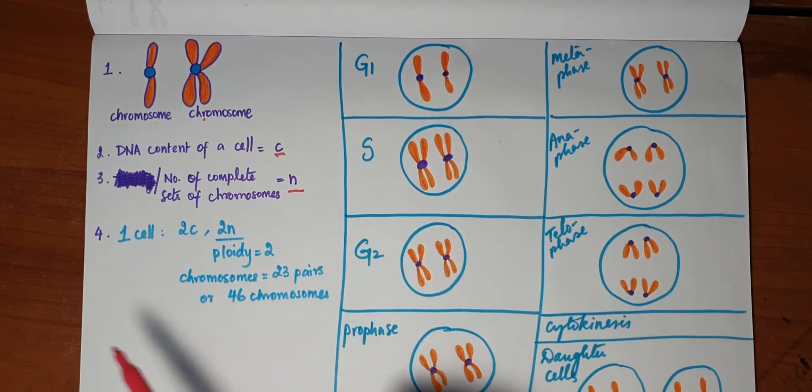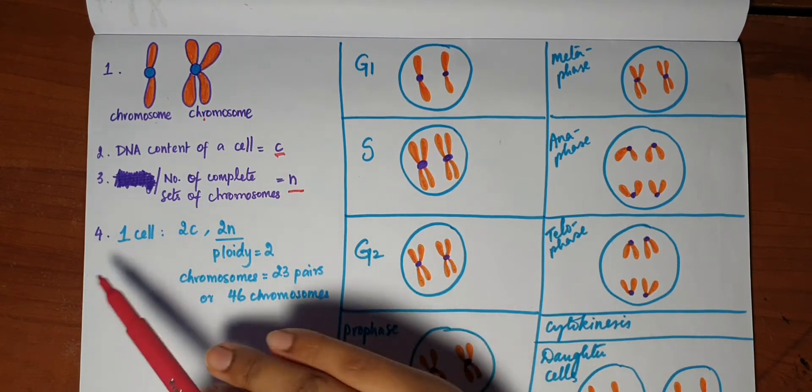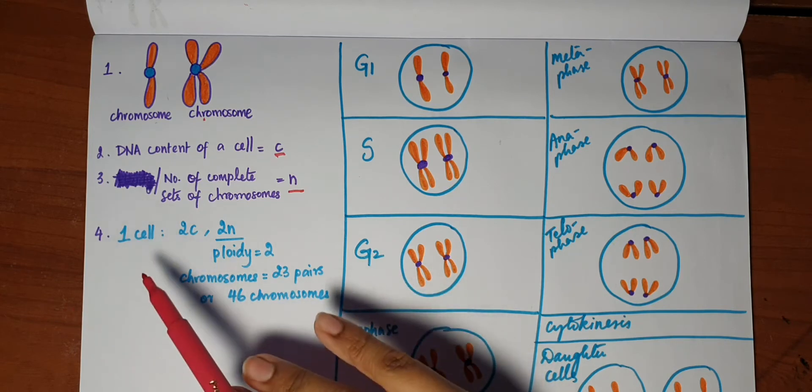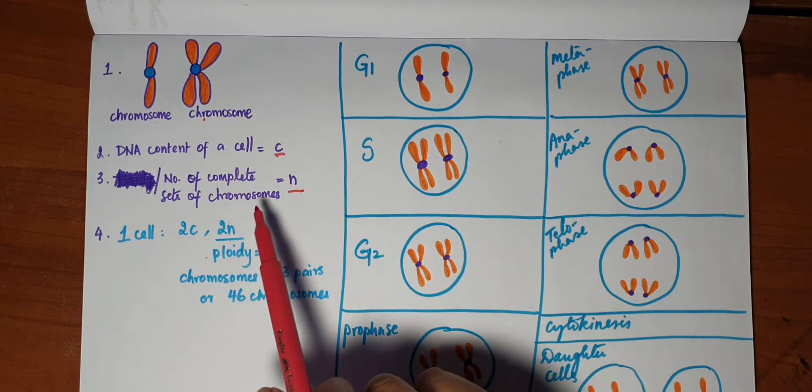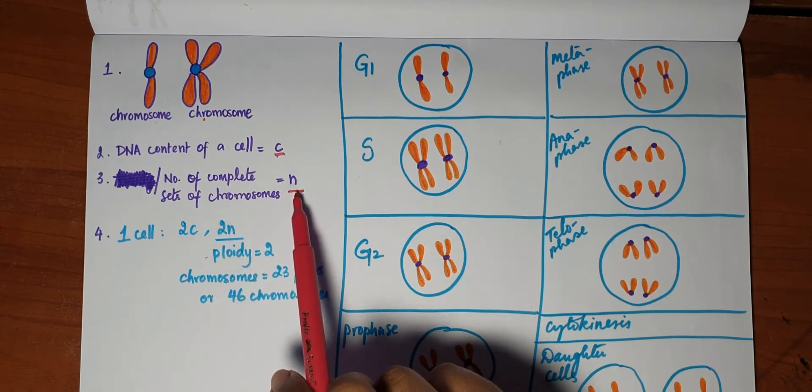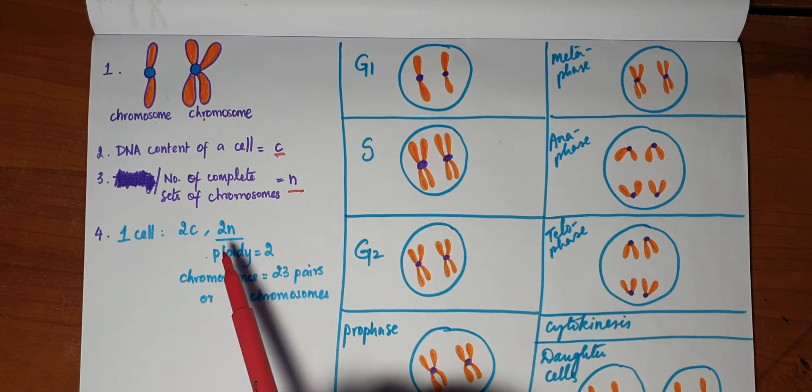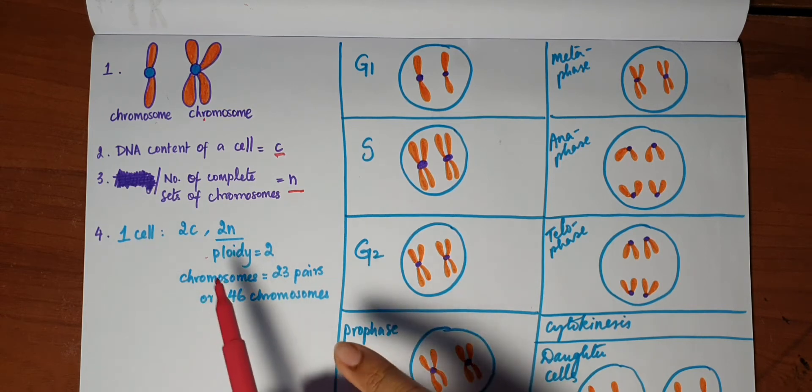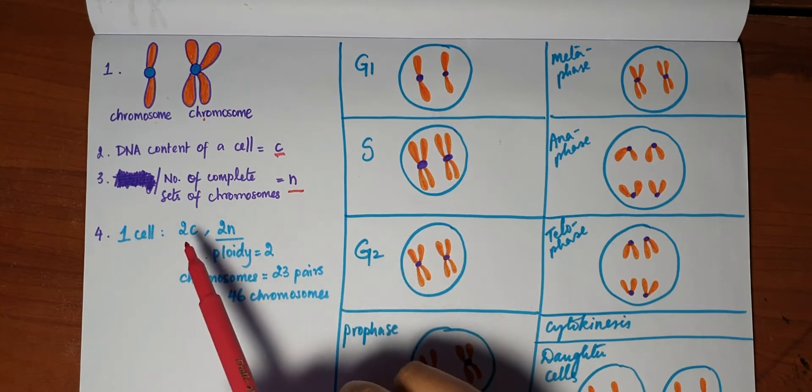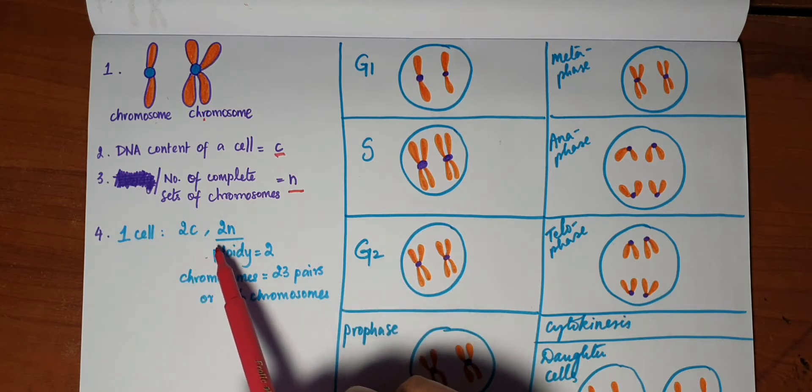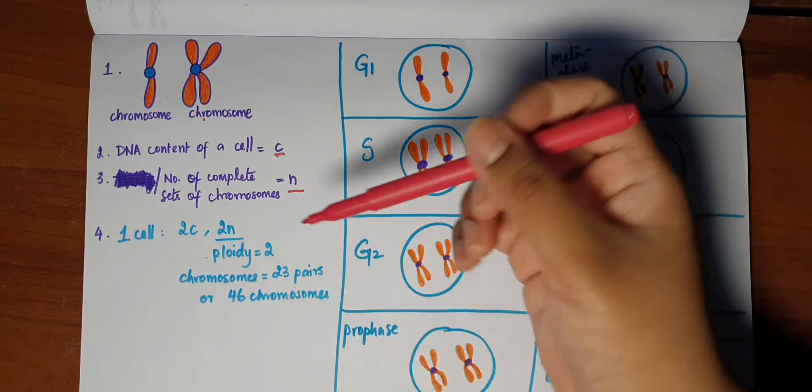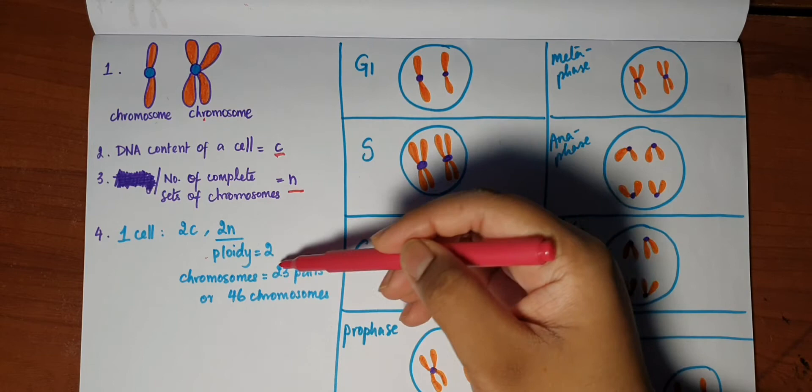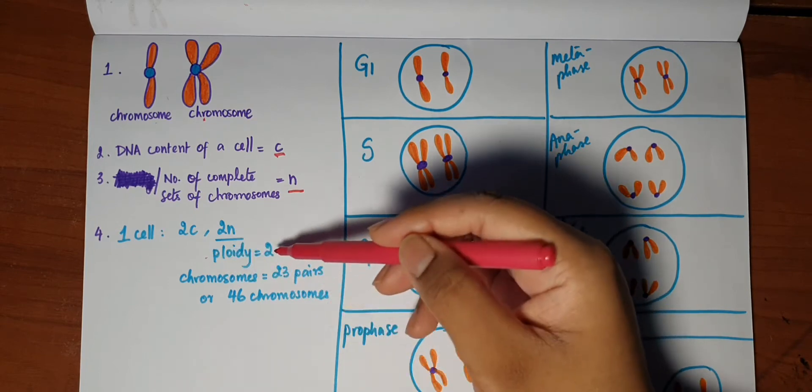Now the most important thing: in one cell, in any cell of a human, we represent the DNA content as 2c and the number of complete sets of chromosomes as 2n. Now remember, all of our cells except the gametes are diploid, and all of the diploid cells are represented as having 2c and 2n amount of DNA and chromosomes. Of course, this is applicable only for our cells with ploidy of 2.